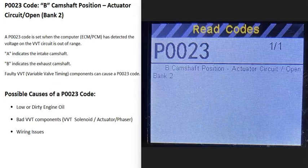Today I'm talking about a P0023 code — what it is and how you can go about fixing it. A P0023 code is a B camshaft position actuator circuit open, bank 2.